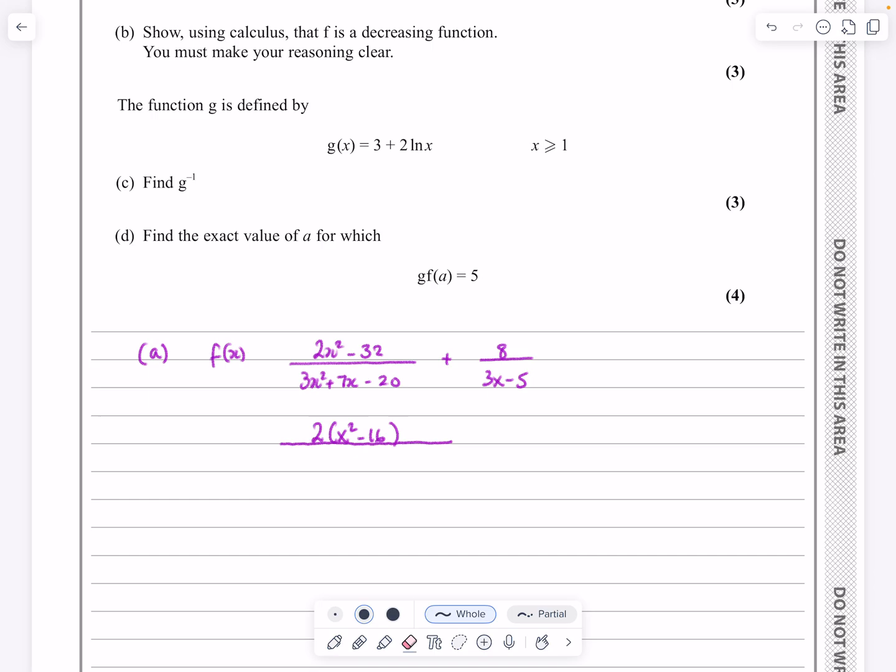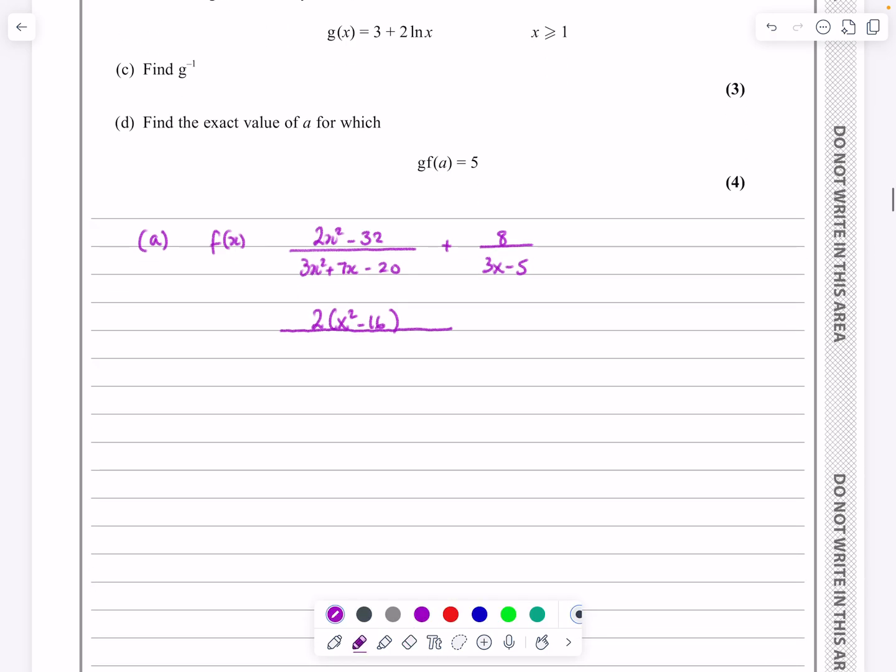But not only that, when I'm factorizing the denominator here, and I've got videos that show you how to do that, I'm not going to spend any time showing you how to do that. But I would not be at all surprised if I end up with an x plus 4 or an x minus 4 in there, simply to cancel out with one of the ones on the numerator. If we do factorize it, it actually factorizes to 3x minus 5 times x plus 4.